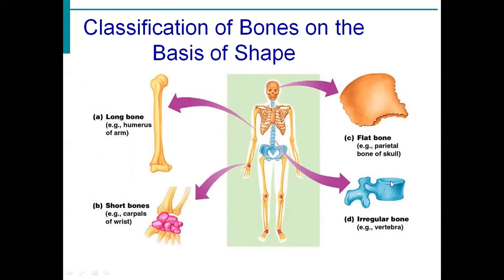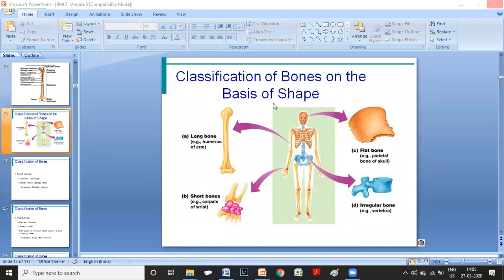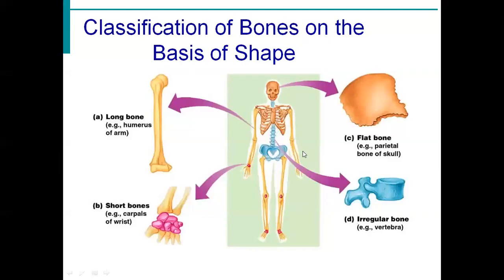Irregular bones are represented by the vertebral column, which I have already observed in the practical class. The vertebral column is divided into cervical, thoracic, lumbar, sacral, and coccyx regions. In each segment of the vertebral column, the bone pattern is very much irregular. These irregular bones are aligned with different parts of the body — for instance, in the thoracic cavity, they are aligned with the thoracic ribs.